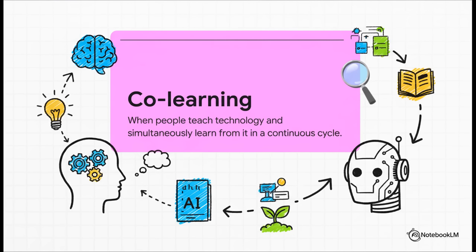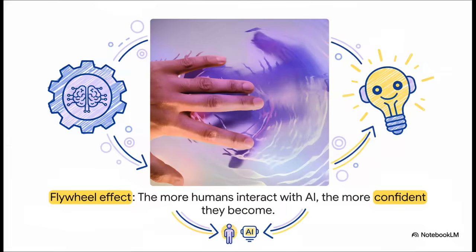So, what the heck is co-learning? Think of it as a two-way street. It's this continuous feedback loop where we are constantly teaching the AI how to be better. And in that same process, the AI is teaching us, helping us get better at our own jobs. It's a truly symbiotic relationship.